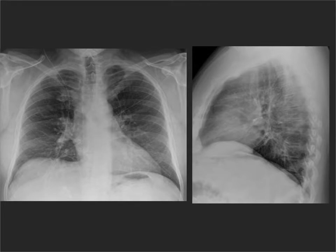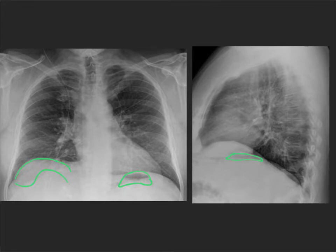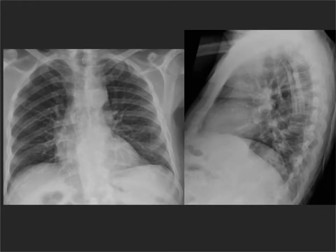Gas bubbles can also be helpful. If you have a nice big gas bubble under one hemidiaphragm but not the other — in this case it's a stomach, but it's not always a stomach — then that can be helpful. Sometimes you have colon up under the left, or a big loop of gas-filled colon up between the liver and the hemidiaphragm on the right, so you always need to check on the frontal radiograph to make sure you know which is which. In this patient, unfortunately, the heights of the hemidiaphragms are pretty similar, and there's no nice gas bubble to help us either.